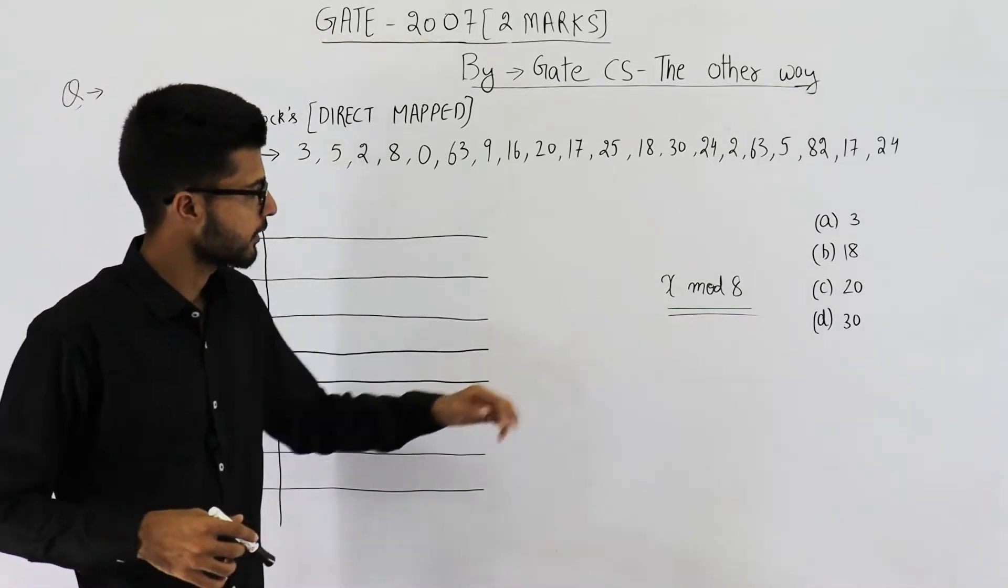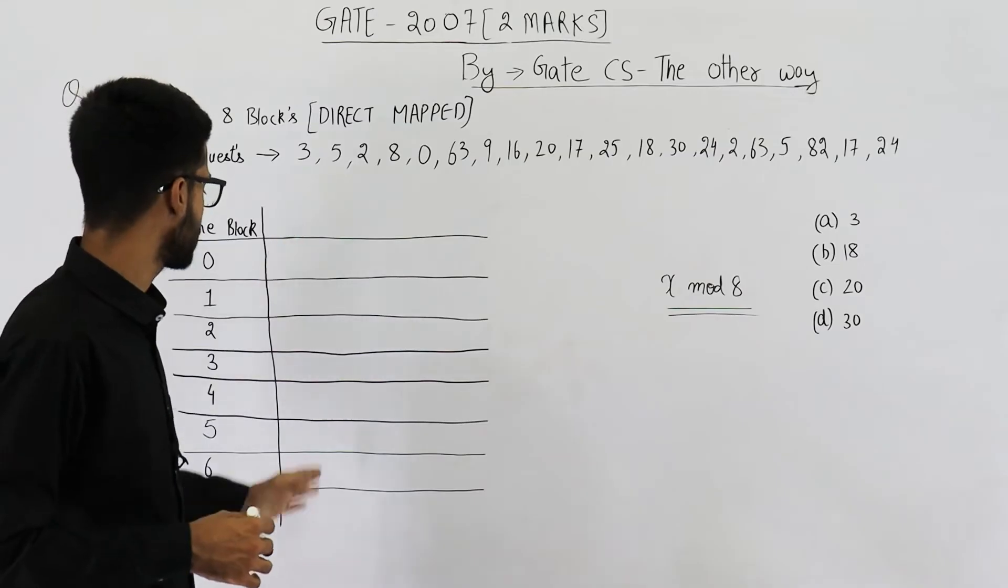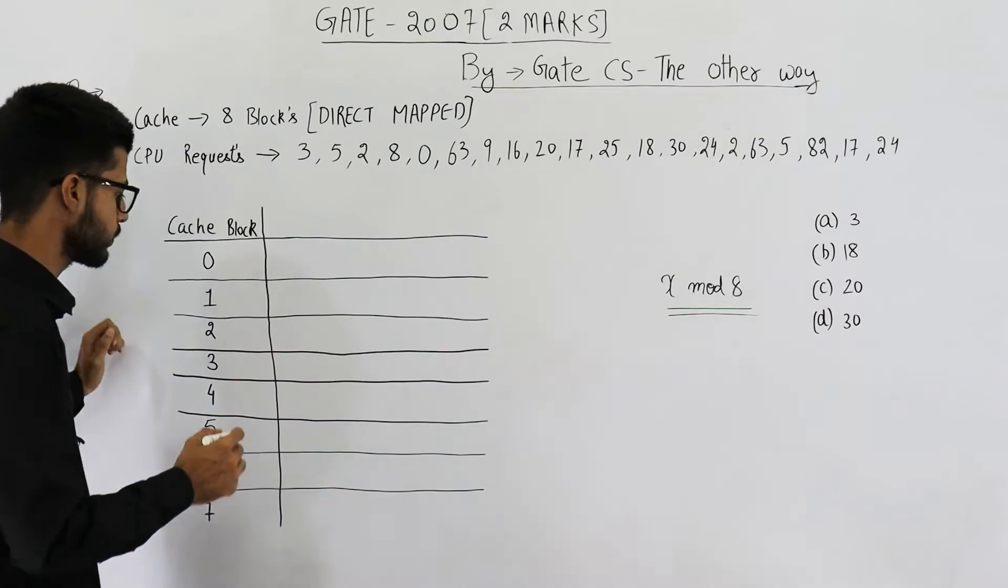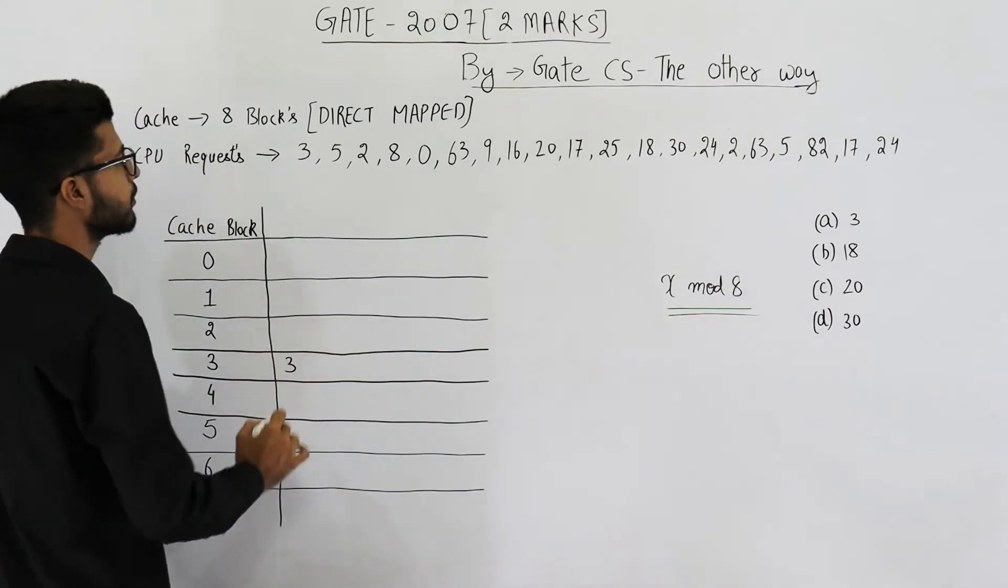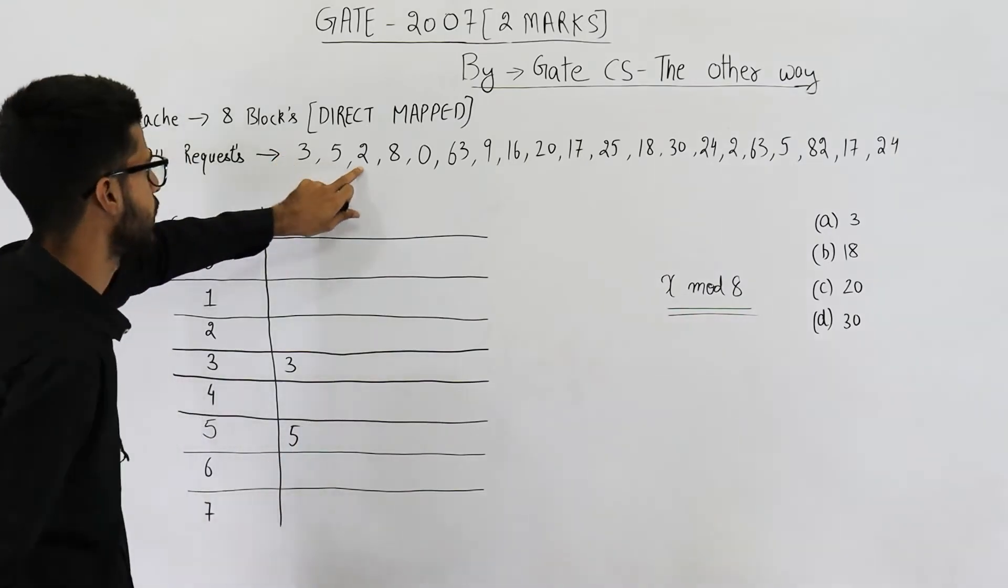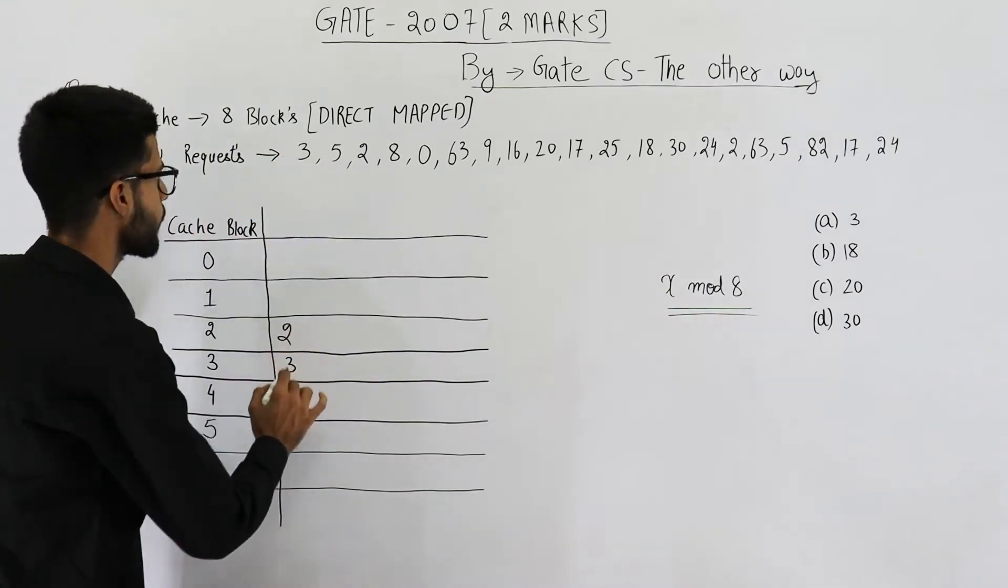You can see the formula is x mod 8, 8 because the total number of blocks in cache are 8. So 3 mod 8 will give you 3. That means this will be placed here. Next one is 5, 5 will be placed here. 5 mod 8 is 5, 2 will go here.